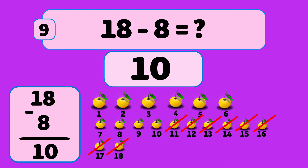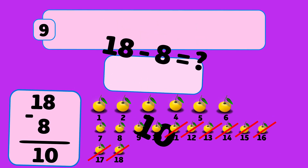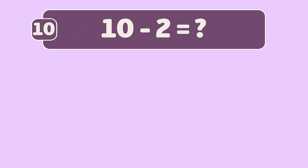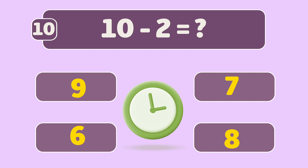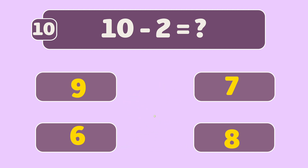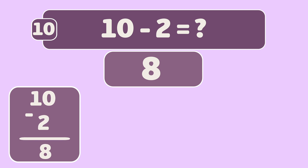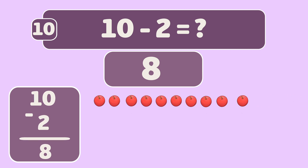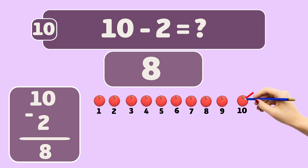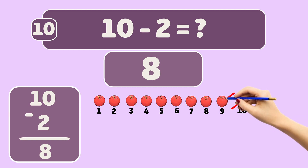Now we have ten oranges left. What is ten minus two? The answer is eight. We start with ten apples and remove them one by one: ten, nine. Now we have eight apples left.